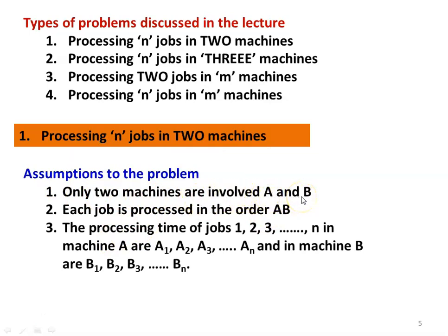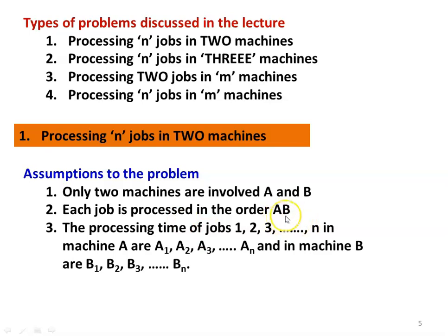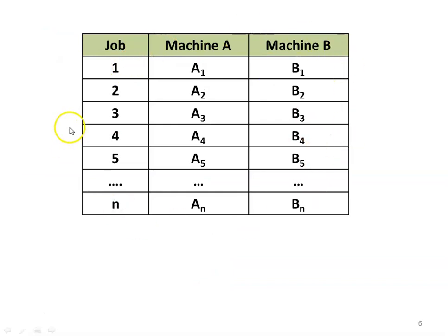Each job is processed in the order A then B — every job is first processed on machine A, then on machine B. The processing times for jobs 1 through N on machine A are A1, A2, A3, ..., AN, and on machine B are B1, B2, B3, ..., BN. The table represents jobs 1 through N with corresponding processing times for machine A and machine B.